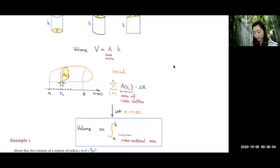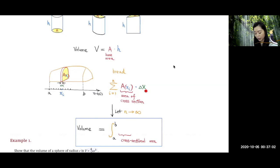Let's focus on the i-th slice over here. If this slice is very thin, it's almost like a cylinder, so its volume will be base area times the thickness. The base area here — let's think about that as the cross-sectional area corresponding to the point xi. So A(xi) is this cross-sectional area at xi, and delta x is the thickness. Multiplying base area by thickness gives an approximation to the volume of this slice.